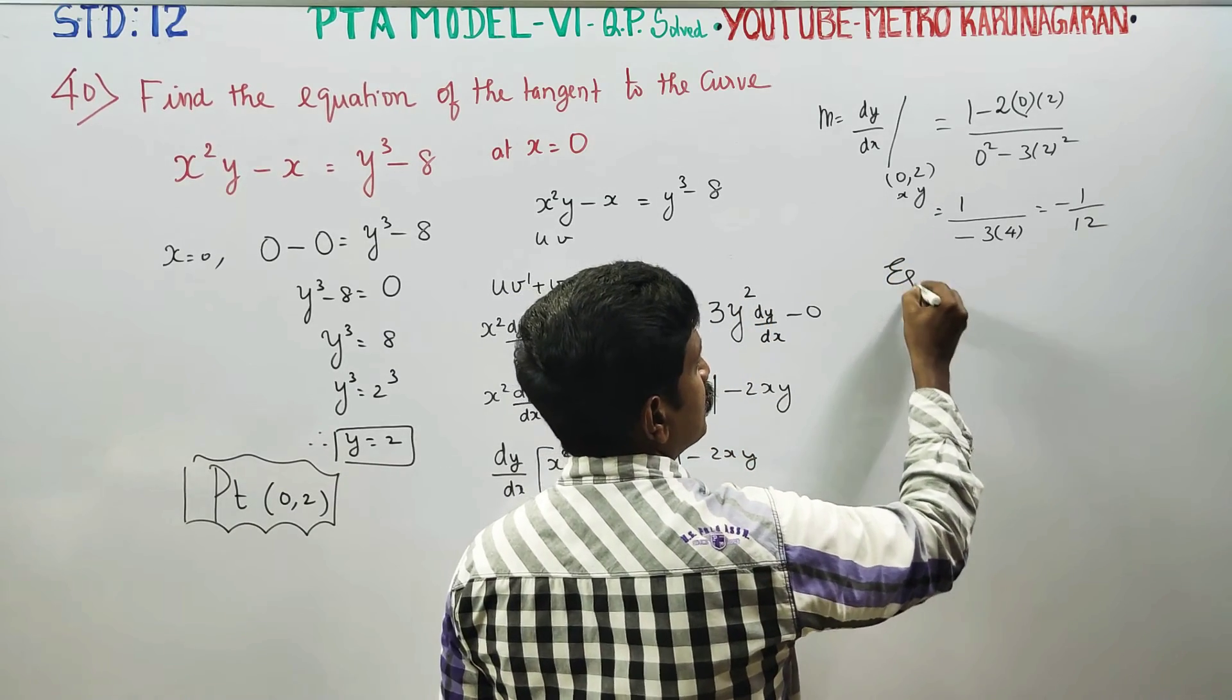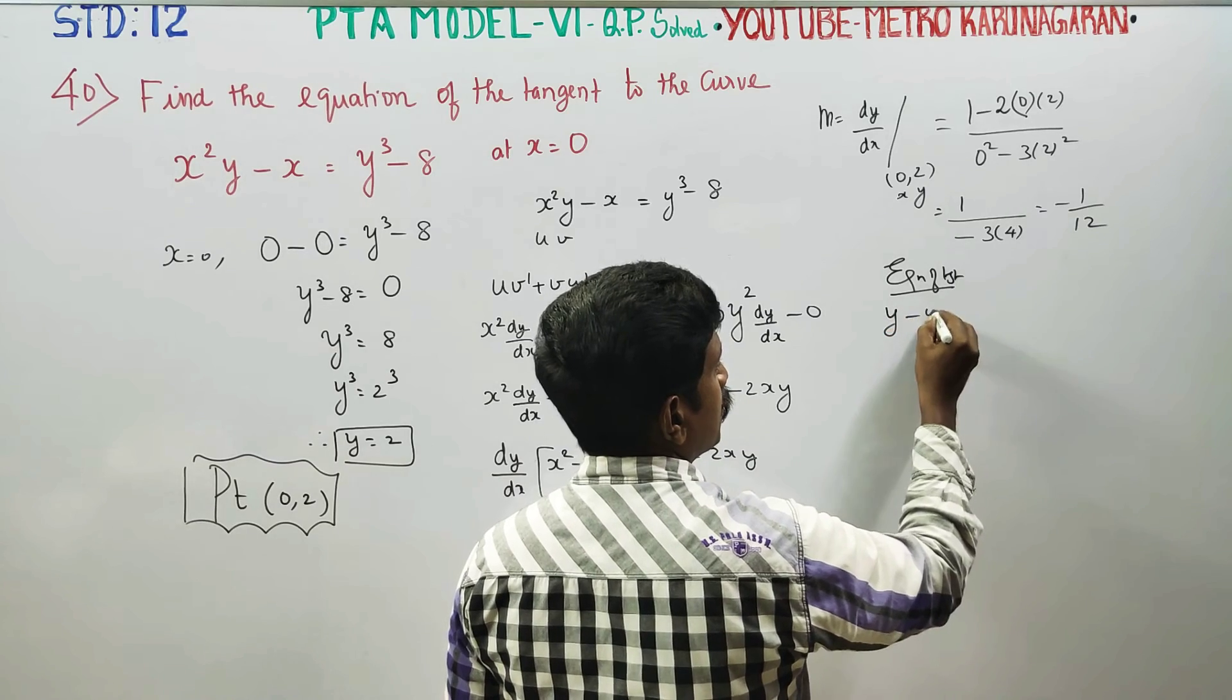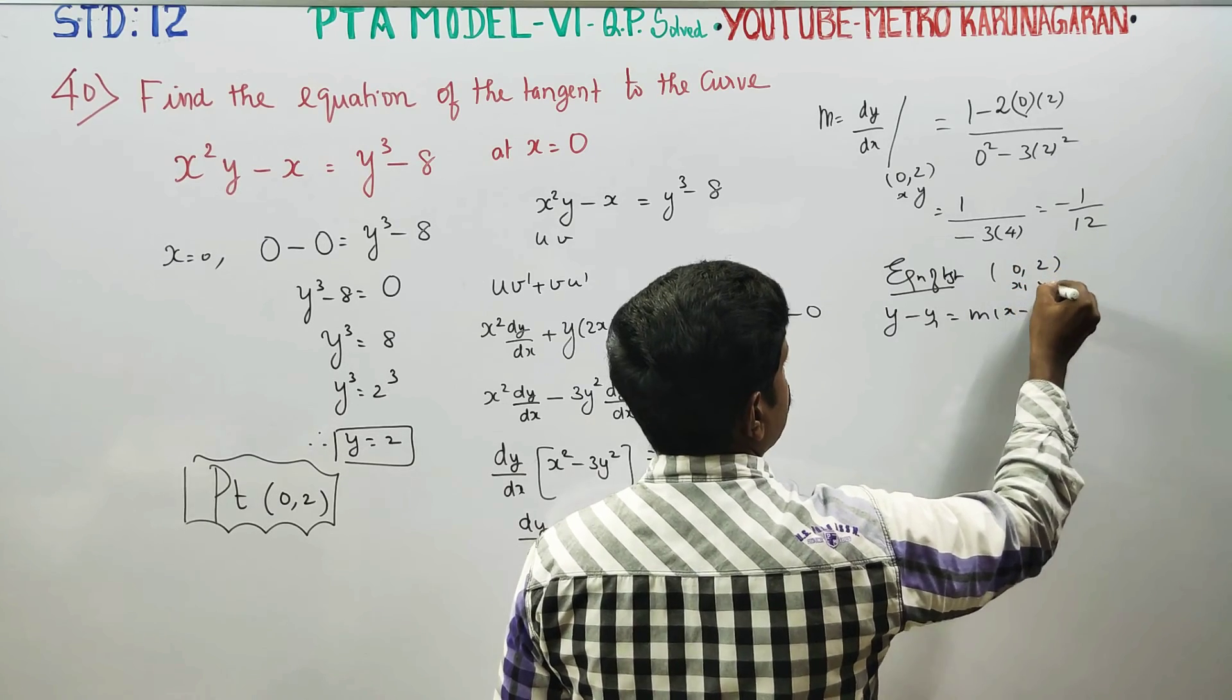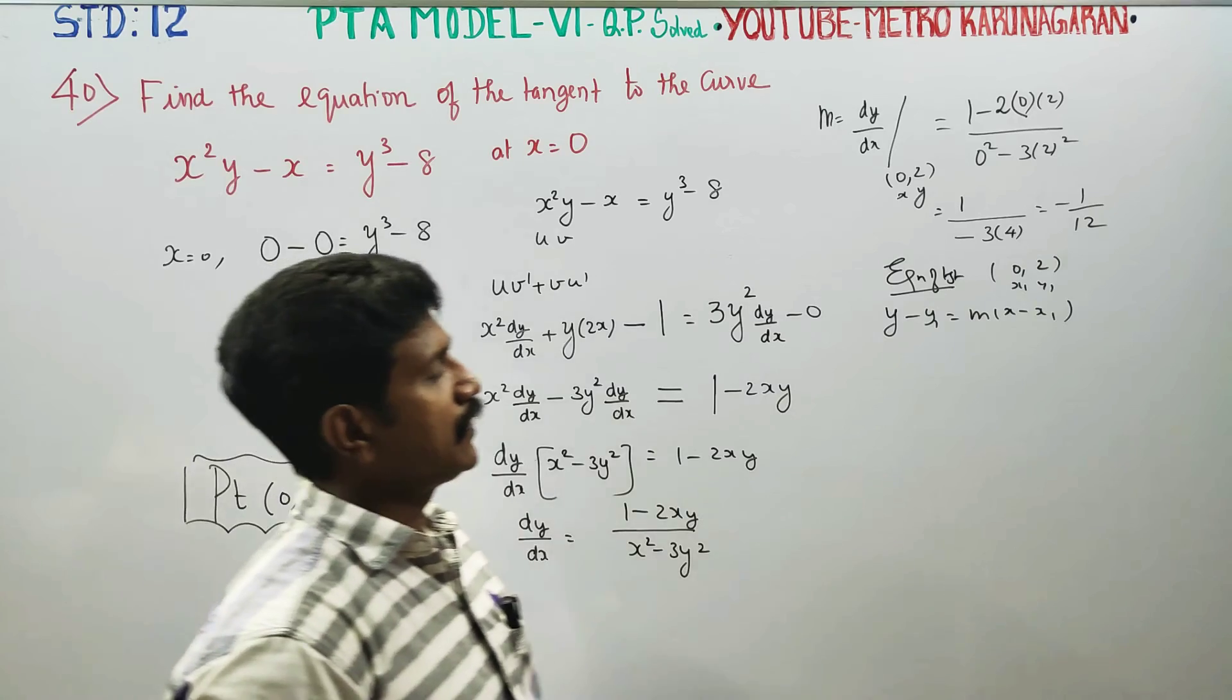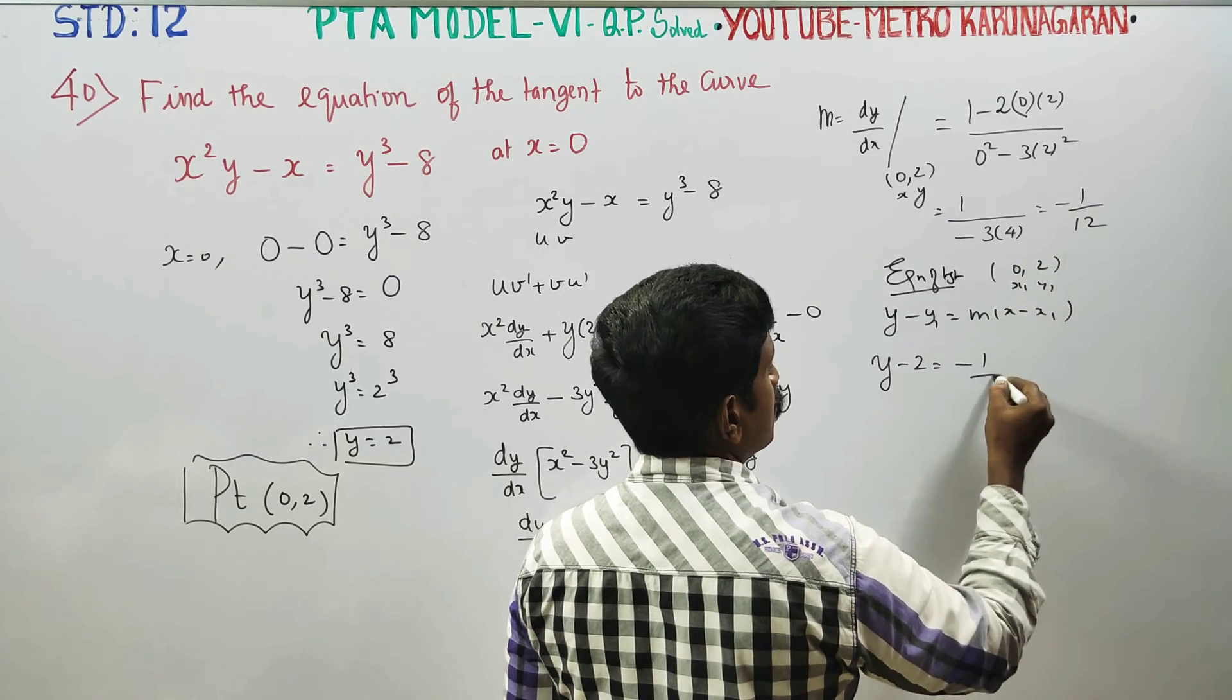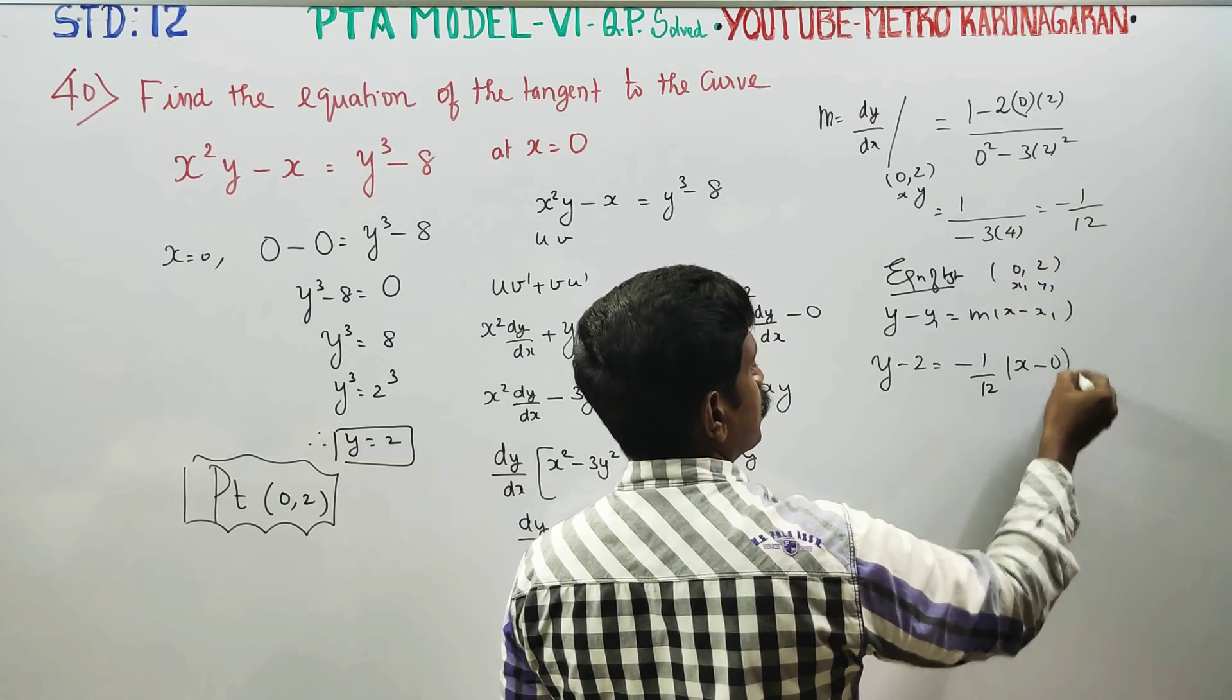Now equation of tangent. Equation of tangent formula: y minus y1 is equal to m into x minus x1. x1 y1 is our point, 0, 2. Therefore y minus 2 is equal to m which is minus 1 by 12 into x minus 0.